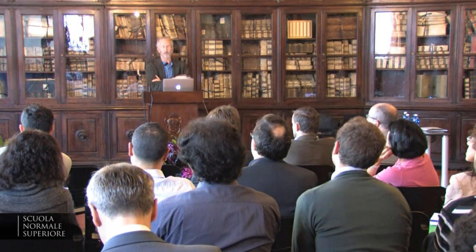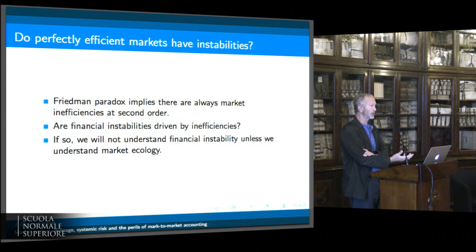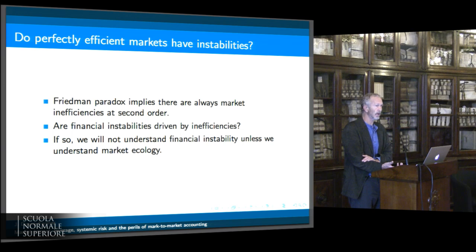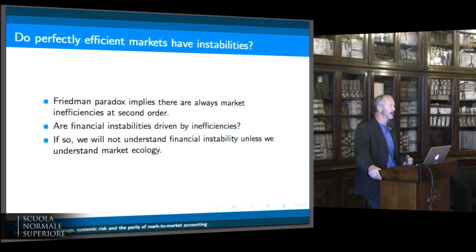The Friedman Paradox implies there are always inefficiencies at second order. One can ask: when we're talking about financial instability, is that something that happens in an efficient market or not? As I believe, the financial instabilities depend on these second-order effects, and so to understand them we really need to understand the ecologies we're looking at in some detail.